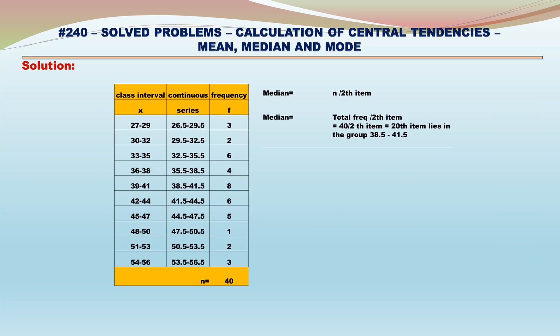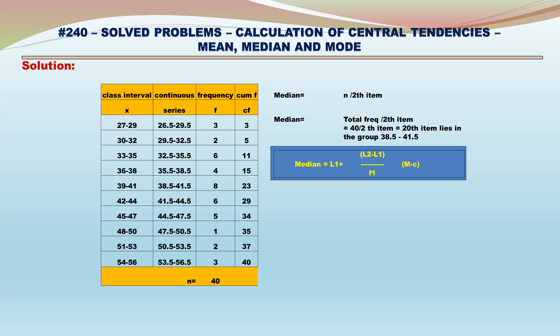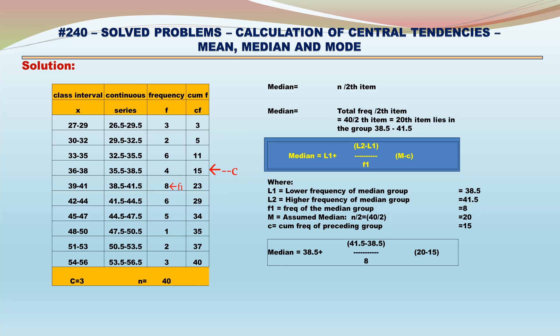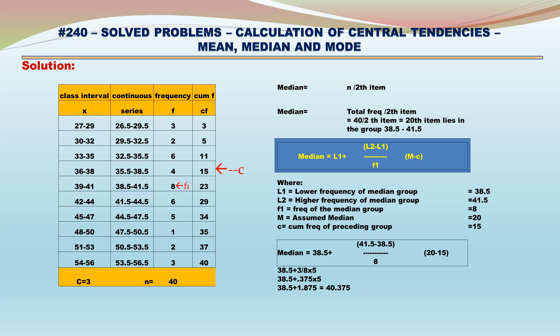Let us calculate median. Median = (n/2)th item = (40/2)th = 20th item, which lies in the group 38.5–41.5. Median = l1 + [(l2 − l1) / f1] × (m − c), where l1 = 38.5, l2 = 41.5, f1 = 8, m = 20, c = 15. Median = 38.5 + (3/8) × 5 = 38.5 + 0.375 × 5 = 38.5 + 1.875 = 40.375.